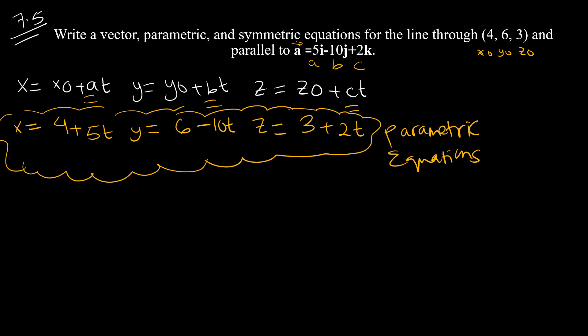Moving on to symmetric equations. In my previous videos, I explained that to find the symmetric equation, you isolate T once you have the parametric equation. Isolating T here, for the first equation we have x equals 4 plus 5T. We're isolating T, so what do we do?